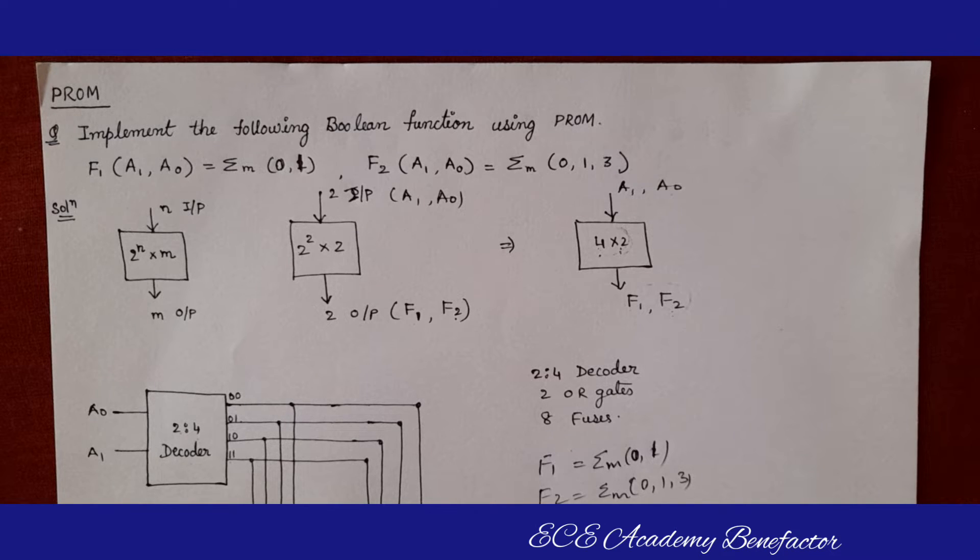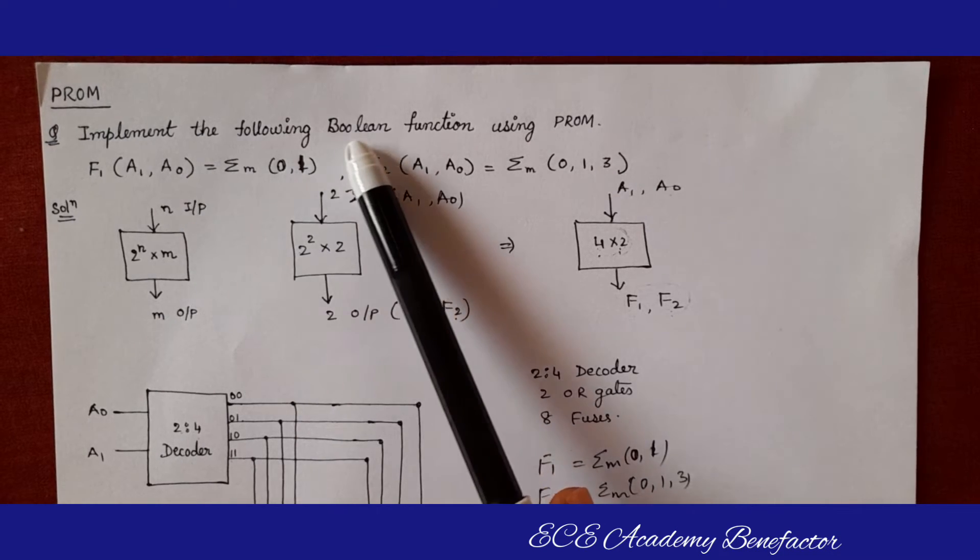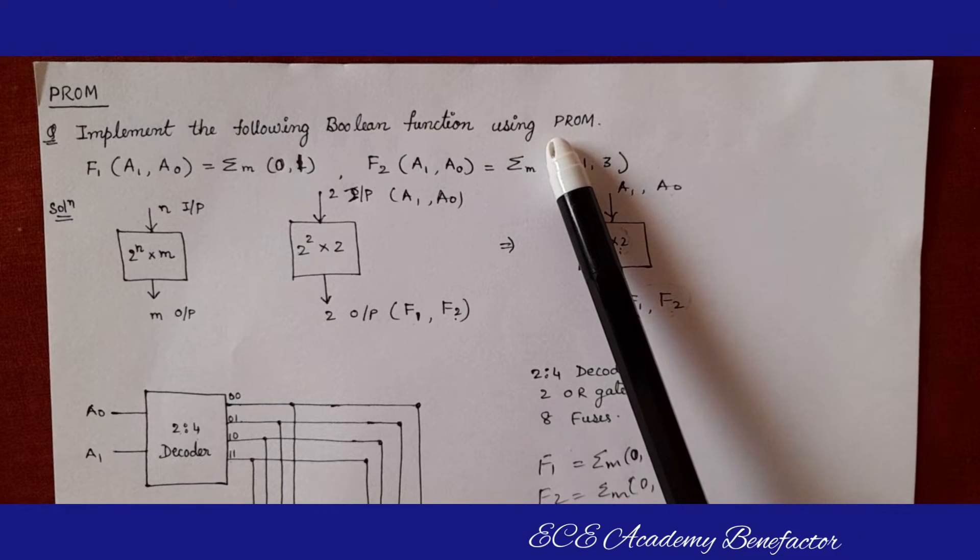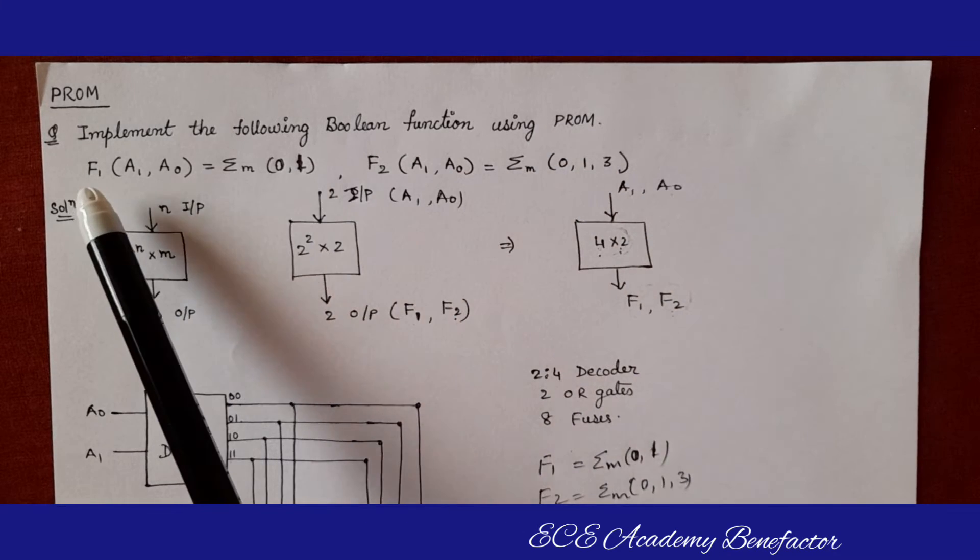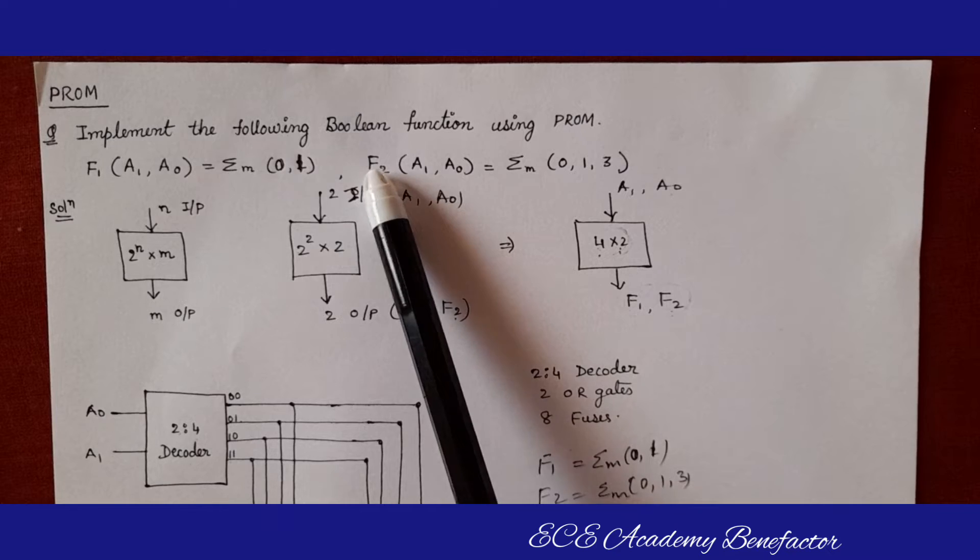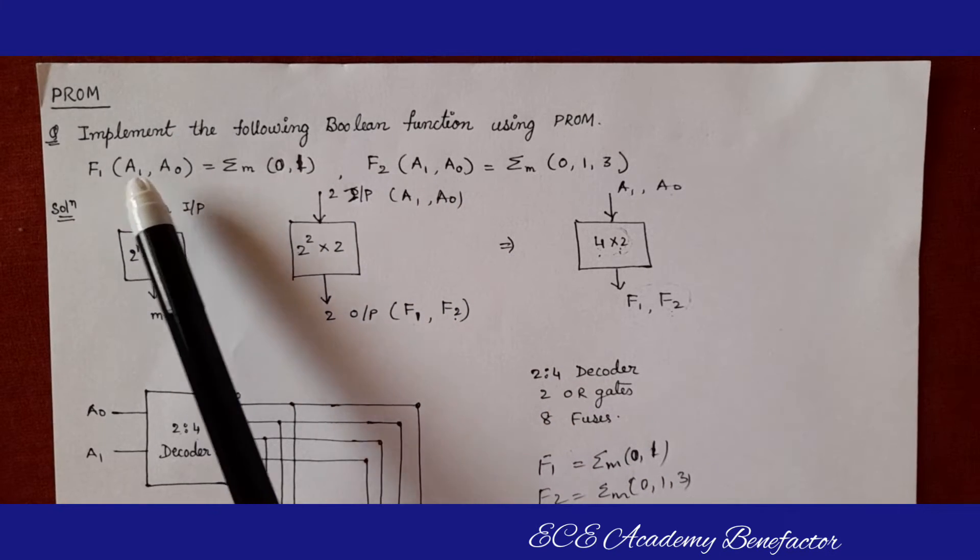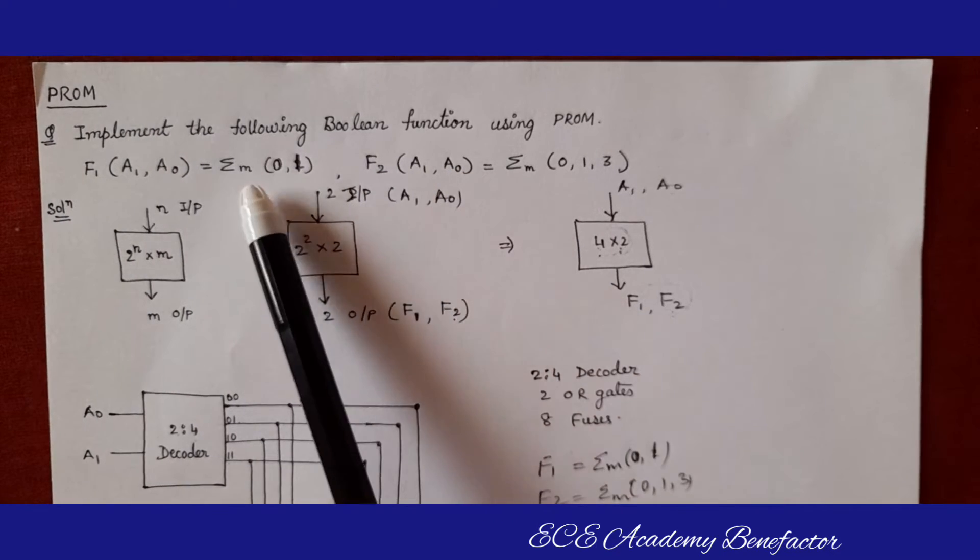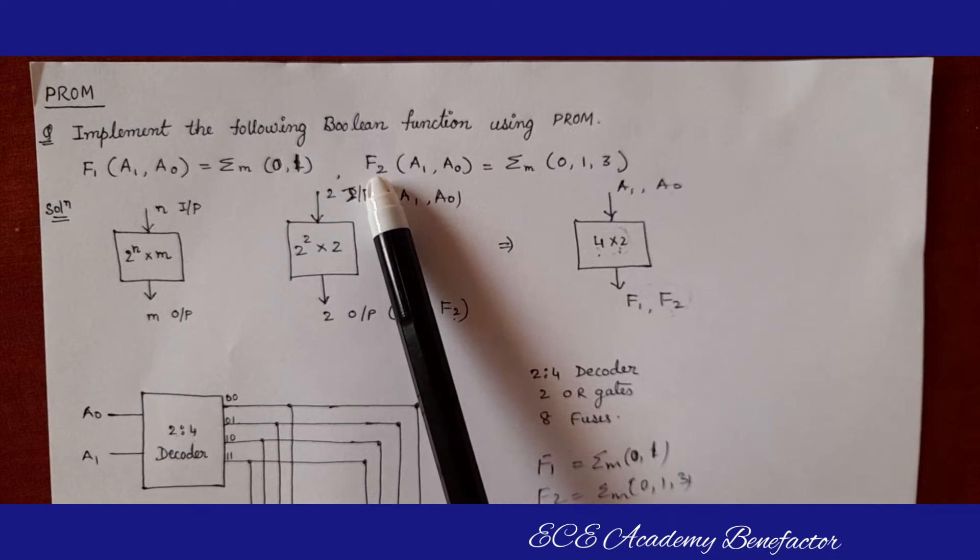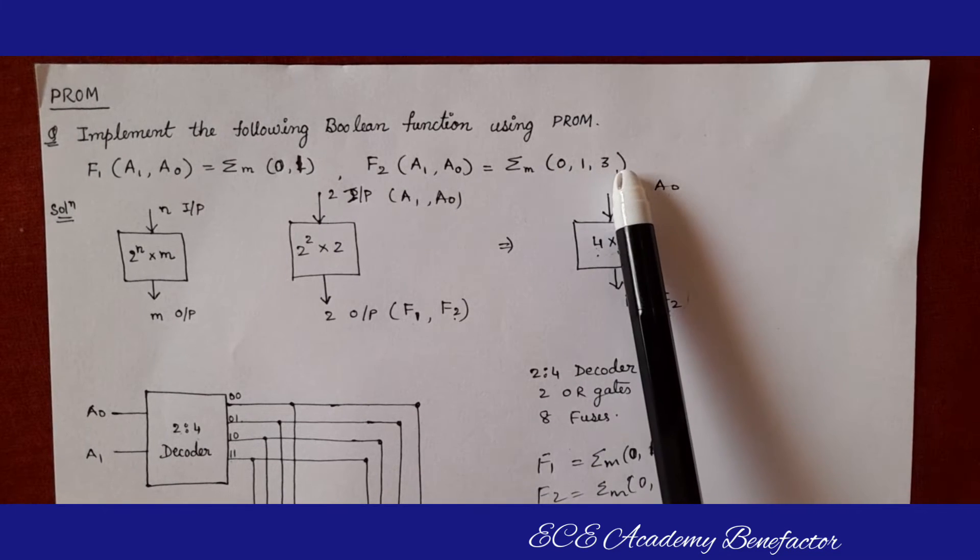Let us start the problem. Implement the following Boolean function using PROM. The two functions are f1 and f2. Their input variables are a1, a0. Minterms for f1 is 0 and 1, and for f2 the minterms are 0, 1 and 3.